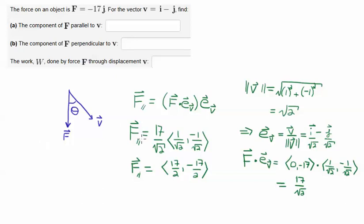All right, then if I just plug the relevant information into this formula, I get the projection of F along V is this scalar product. So that is just going to be minus 17.